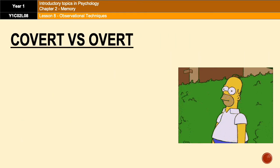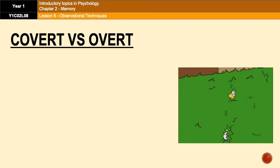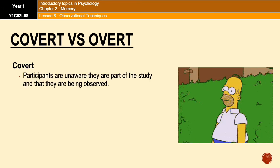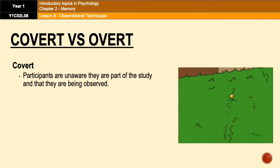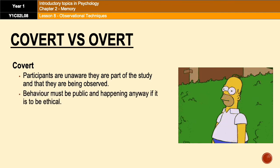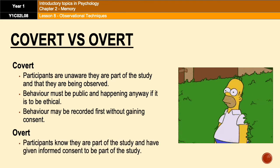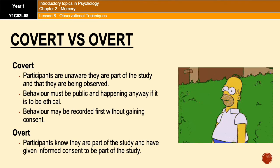Moving on, we have covert versus overt observations. This effectively means that either the participants know they're being observed or they don't. Covert observations involve participants being unaware that they're part of a study, meaning they're generally being observed from across a room, from a balcony, or from a bench in the city centre. In a covert observation, behaviors must be public and happening anyway for it to be ethical, in which case behavior can be recorded without first gaining consent. In an overt observation, participants know they're part of a study and have given informed consent beforehand — for example, the parents in the Strange Situation knew they were being observed.